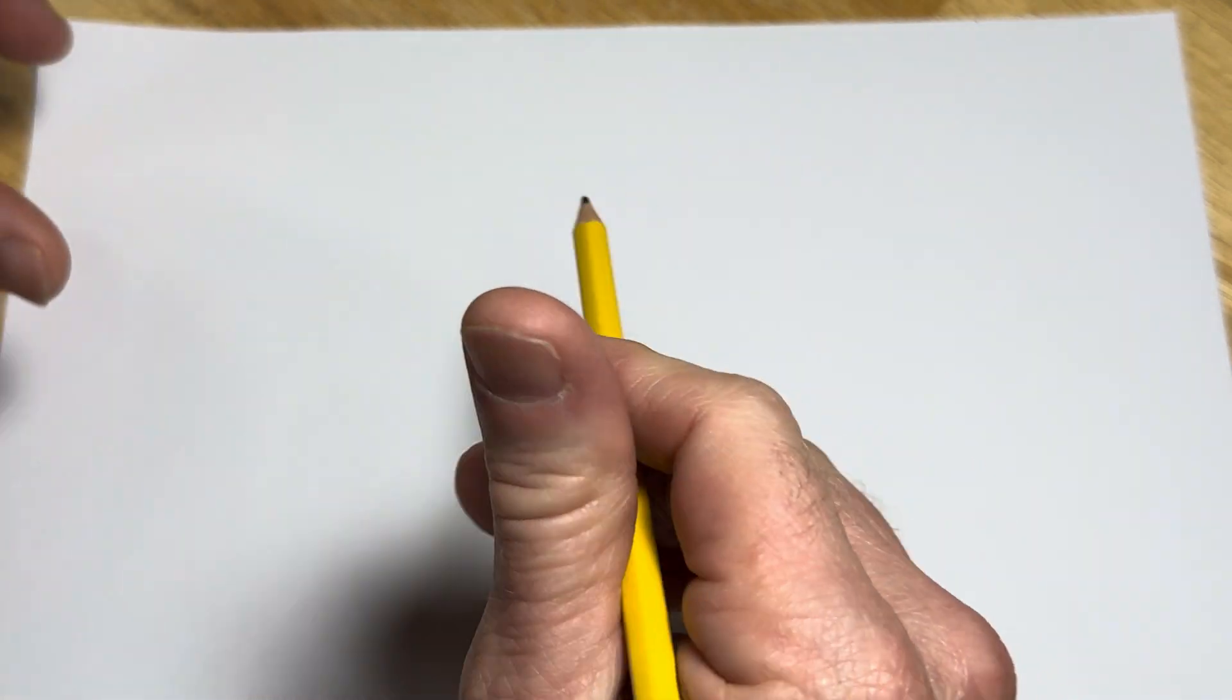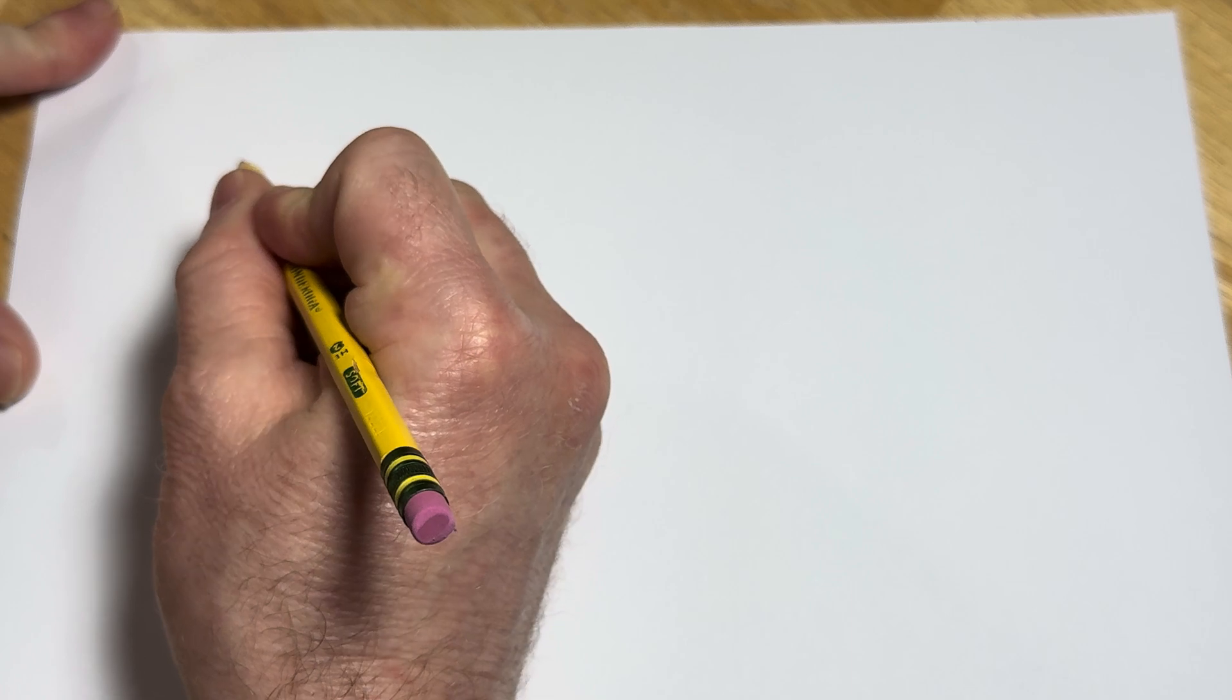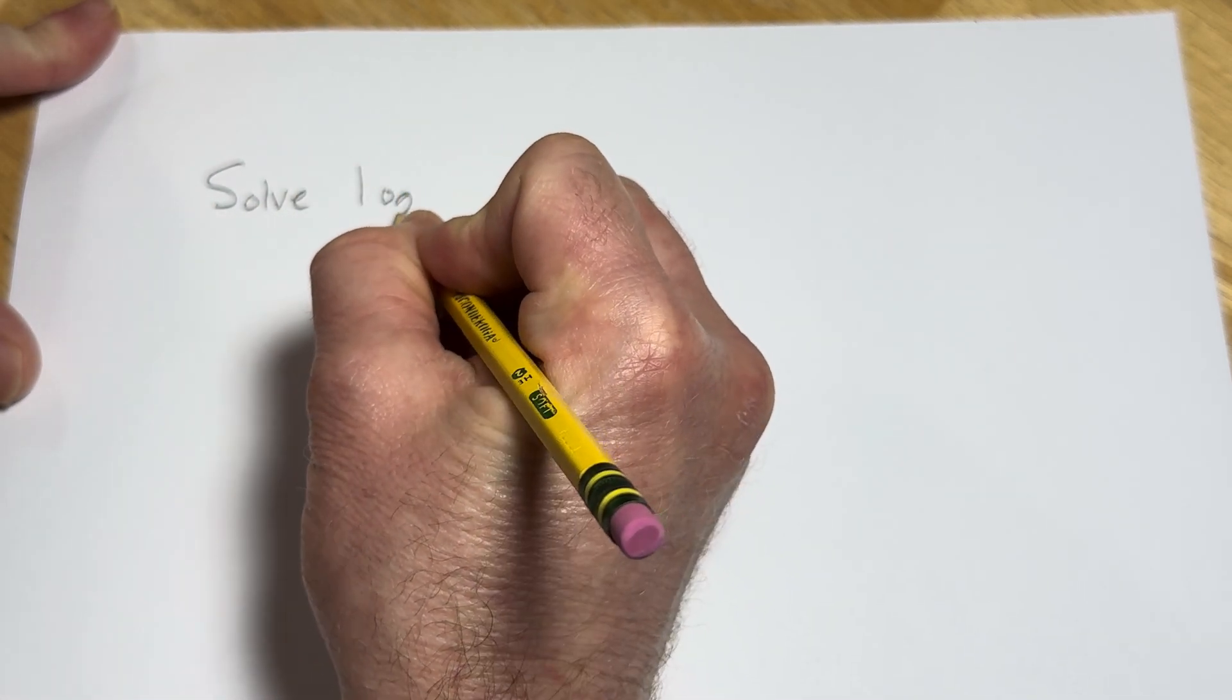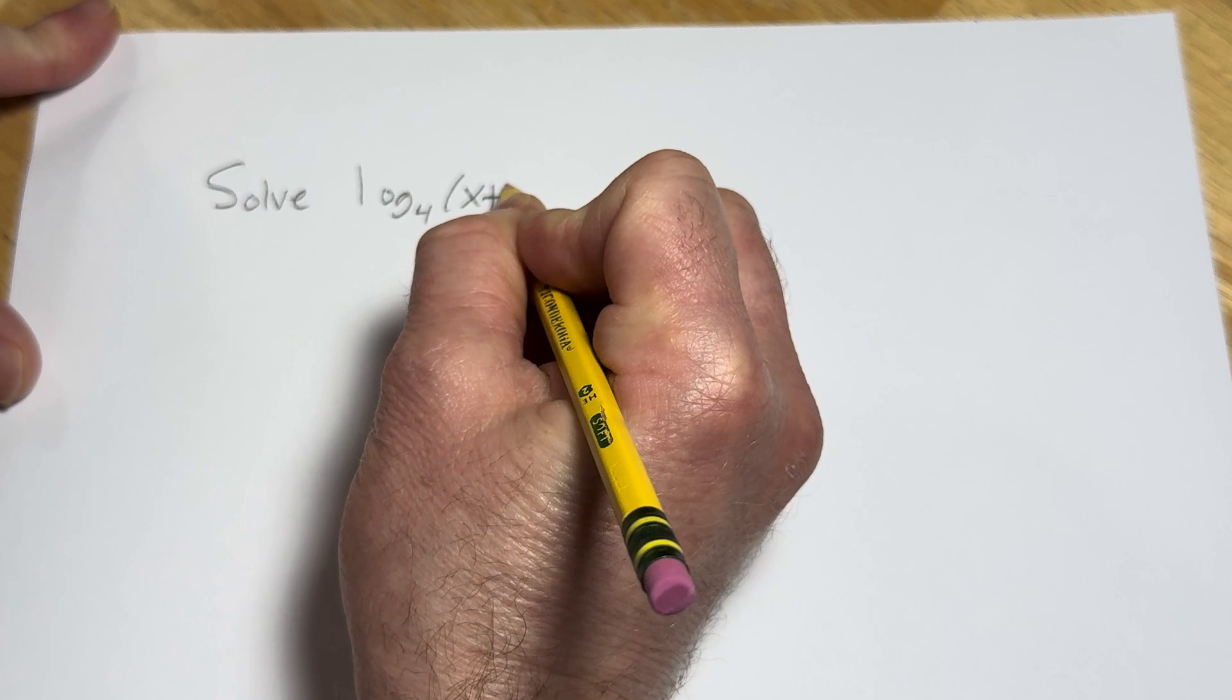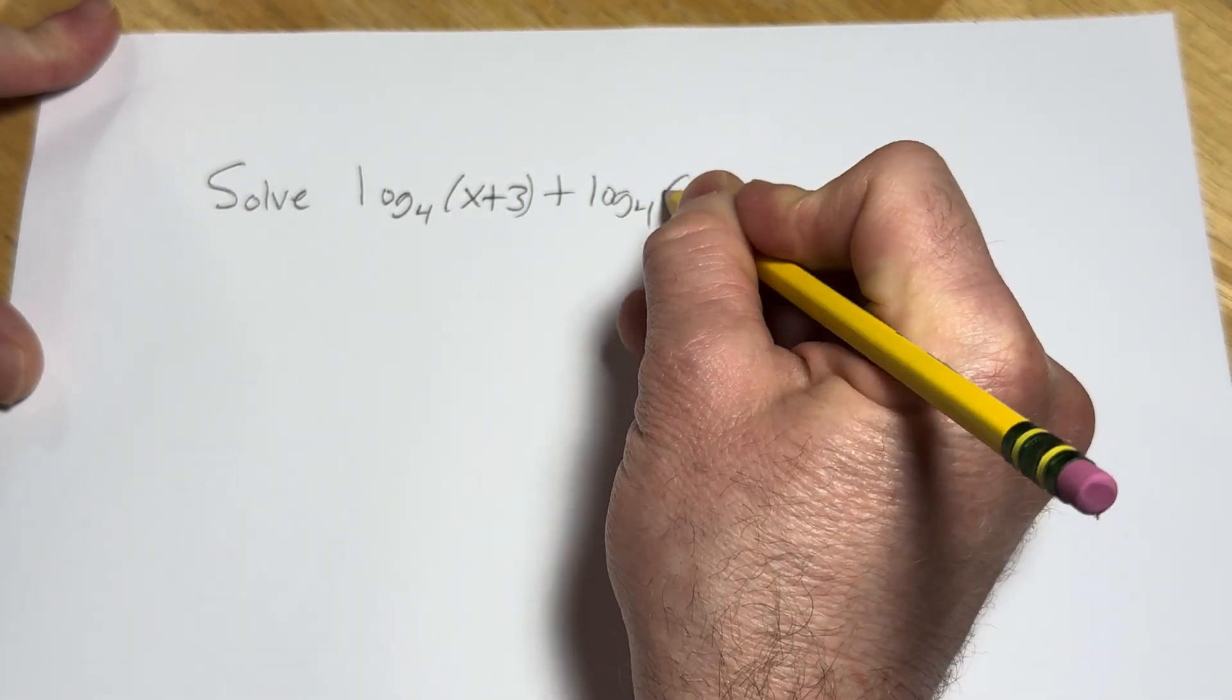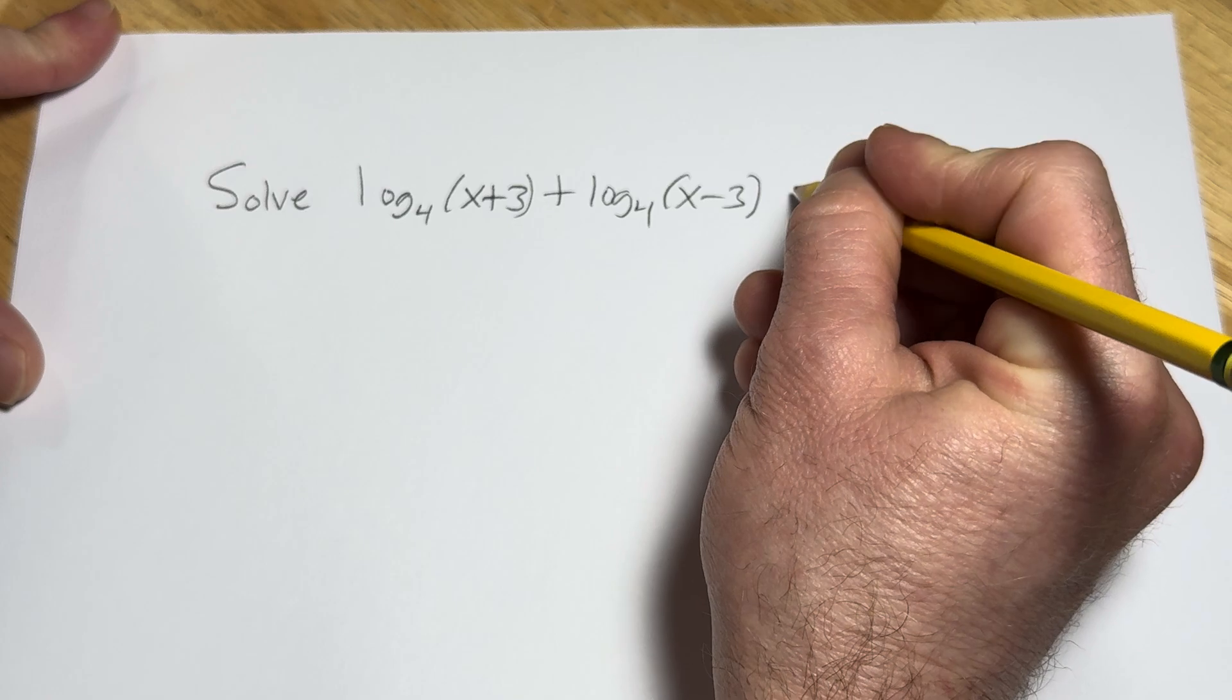Hello, in this video we are going to solve an equation that involves two logarithms. Let's go ahead and write it down. The question is to solve log base 4 of x plus 3 plus log base 4 of x minus 3 equals 2.